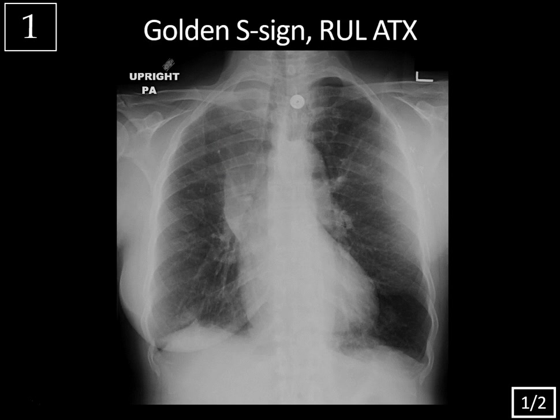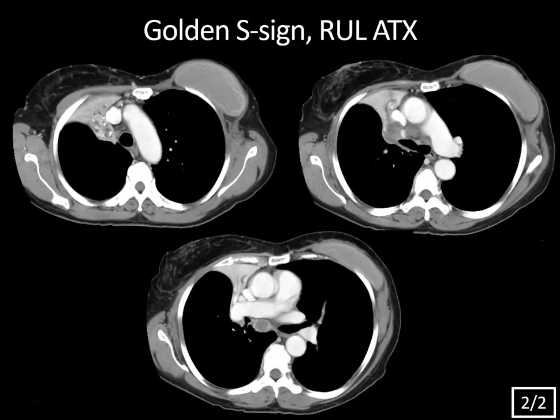This is known as the Golden S sign in the setting of right upper lobe atelectasis. Whenever you see this, it's a clue to an underlying obstructing mass. It could be a primary bronchogenic carcinoma or metastatic disease causing lymphadenopathy. In this case, this was a patient with breast cancer that had previous breast surgery and now has metastatic disease to the mediastinum, as evidenced by these nodes in the right hilum, also some subcarinal lymphadenopathy, causing right upper lobe obstruction and subsequent complete collapse of that right upper lobe.